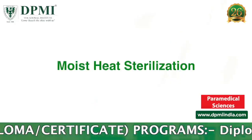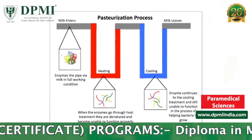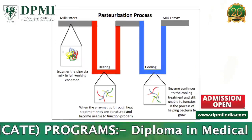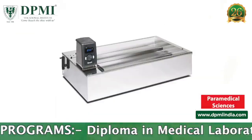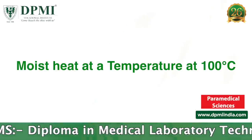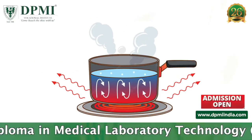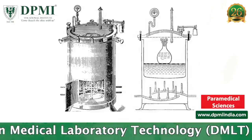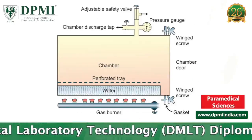Moist Heat Sterilization below 100 degrees centigrade includes Pasteurization, Water Bath, and Inspissation. At a temperature of 100 degrees centigrade, it includes Boiling, Arnold Steam Sterilizer, and Tyndallization.